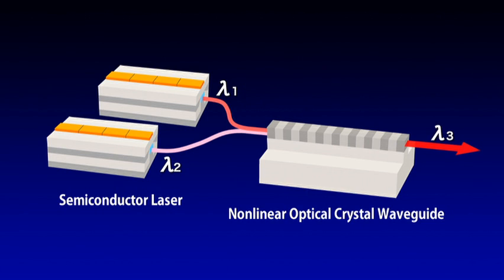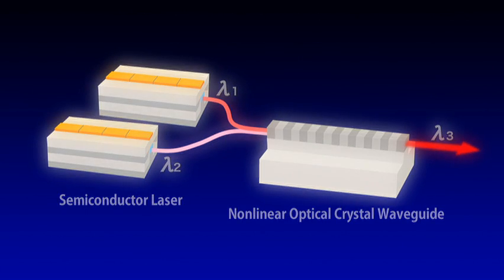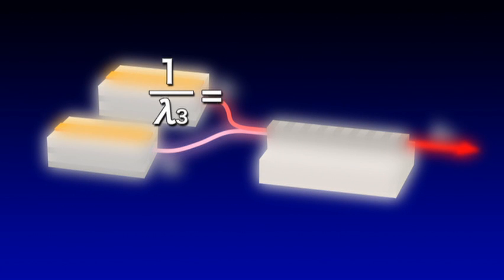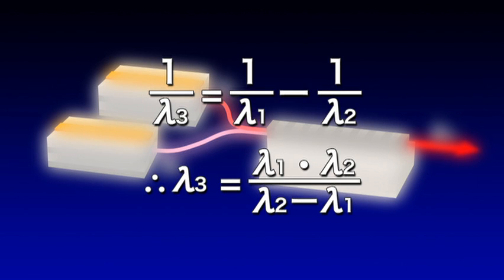When these two wavelengths pass through the nonlinear optical crystal waveguide, they are converted by this formula and are output as wavelength lambda 3. This creates the desired wavelength lambda 3 from input wavelengths lambda 1 and lambda 2.